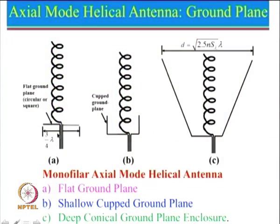Let us start with the previous slide. This is a simple helical antenna and the ground plane size should be at least 0.75 lambda. We are actually feeding it at the base point. I will mention the impedance at this particular point shortly, but let us first understand the concept. Power is fed from here, it goes forward through the helix structure.